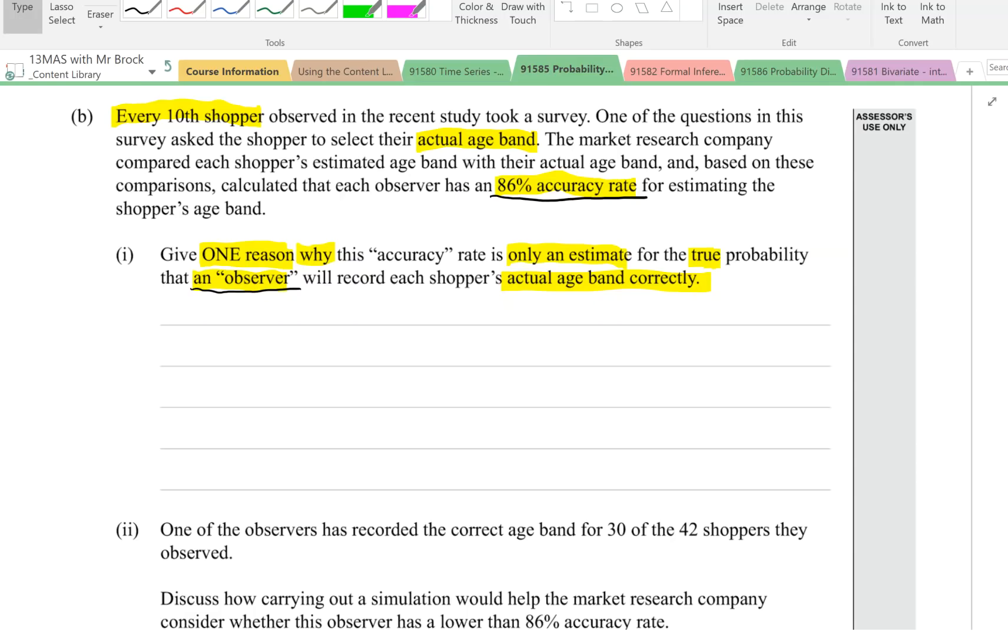The true probability of a particular observer guessing a particular person's age correctly is going to depend on a few things. When you try and guess someone's age, do you find that it's easier to get some people's ages right than others? And do you find that you have some friends that tend to be better at guessing ages than others? There's a lot of things that come into it. Just because in one particular study, this particular observer happened to get 86% right.